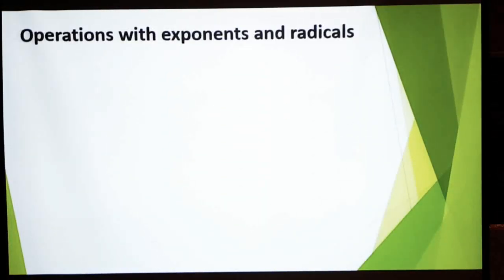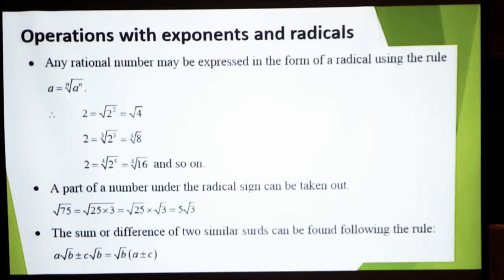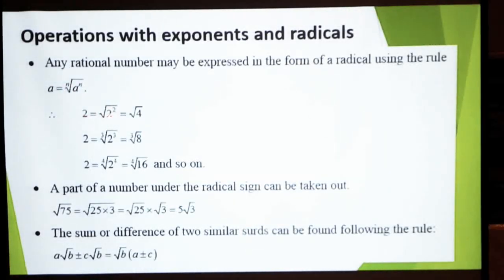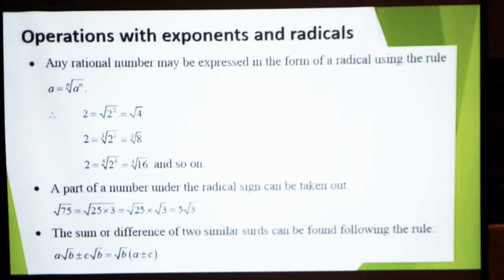اس کے بعد جو operations with exponents and radicals ہے یہ بھی آپ سیکھ لیں — اس میں سے کچھ basic چیزیں ہیں۔ Any rational number may be expressed in the form of a radical using the rule: a = nth root of a^n — very important. یعنی اگر index اور power same ہوں تو base دوبارہ آئے گا — جیسے 2 = √(2²)، 2 = ∛(2³)۔ So cube root of 2³ is actually 2, اور آپ اس کو اس form میں بھی لکھ سکتے ہیں۔